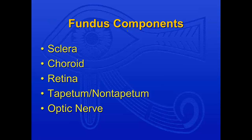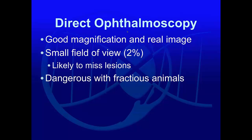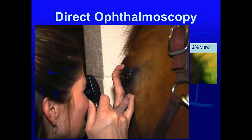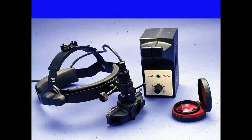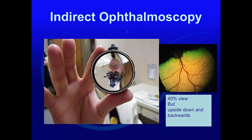How do you look at it? With direct ophthalmoscopy you're only going to get to see about two percent of the fundus, and you're up close and personal — which isn't always the best place to be with some animals. On the left you see that small two percent view; even if you're very diligent you'll probably still miss lesions. On the right with indirect you can see these large lesions that you would otherwise miss.